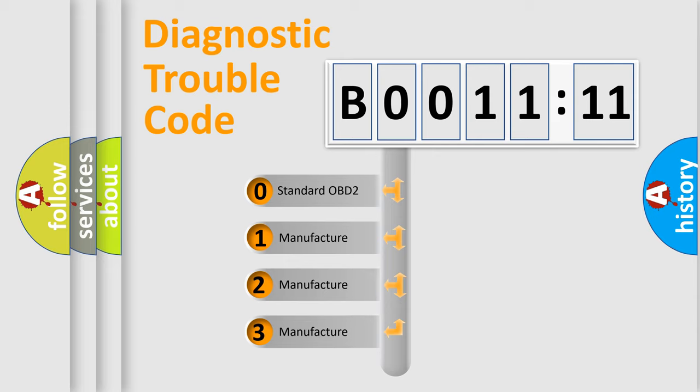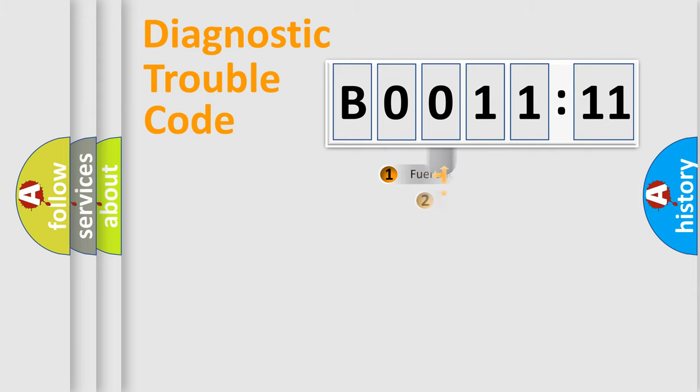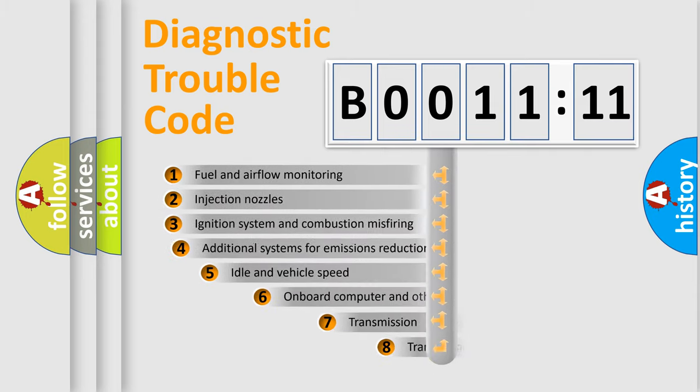If the second character is expressed as zero, it is a standardized error. In the case of numbers 1, 2, or 3, it is a manufacturer-specific expression of the car-specific error.